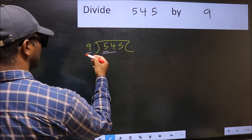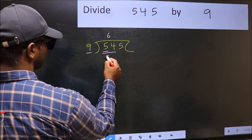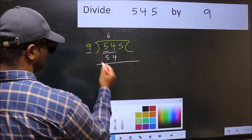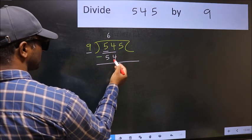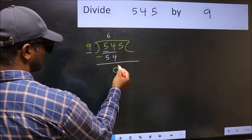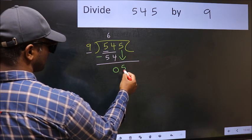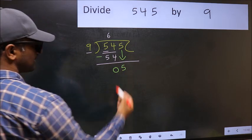When do we get 54 in 9 table? 9, 6, 54. Now you should subtract. 54 minus 54, 0. After this, bring down the beside number. So 5 down.